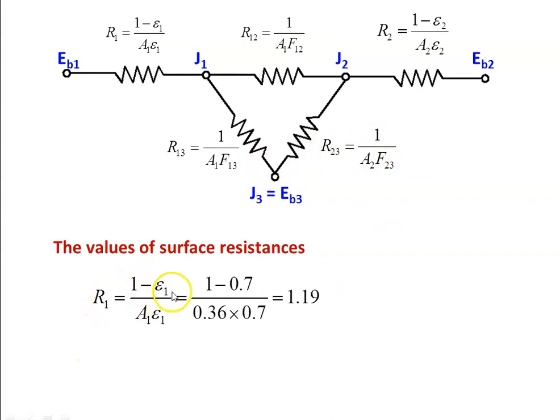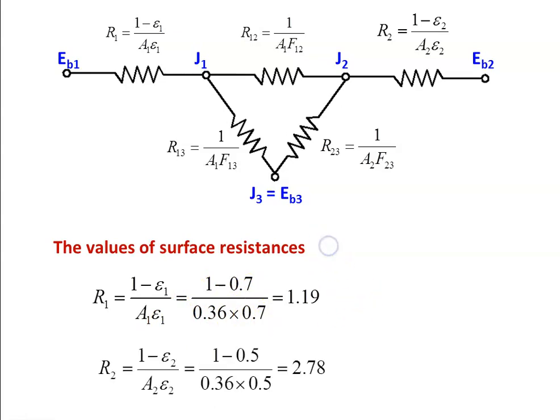Calculating surface resistances: R1 = (1 − 0.7) / (0.36 × 0.7) = 1.19. The surface resistance for the second surface: R2 = (1 − 0.5) / (0.36 × 0.5) = 2.78.